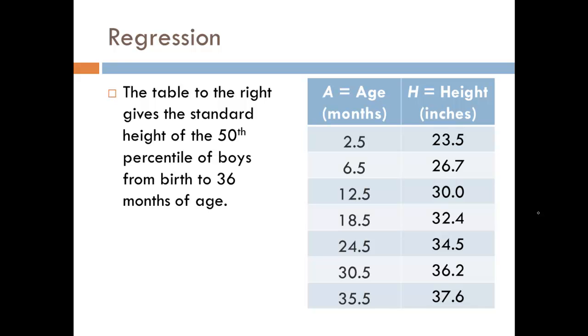So at two and a half months of age a boy at the 50th percentile should be 23.5 inches tall. After six and a half months, 26.7 inches tall. After twelve and a half months, 30 inches. After eighteen and a half months, 32.4 inches. After twenty four and a half months, 34.5 inches. After thirty and a half months, 36.2 inches, and after thirty five and a half months, 37.6 inches tall.